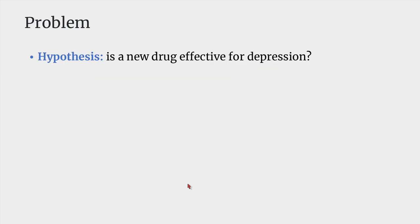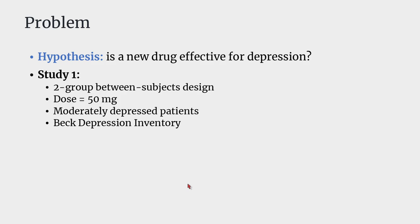Let me start by motivating what this package does and the problem it solves. Assume we have a hypothesis: is a new drug effective for depression? We have one study which is a two-group between-subjects randomized controlled trial where some patients receive a placebo and some receive our new drug. The drug is dosed at 50 milligrams in moderately depressed patients, and the outcome variable is the Beck Depression Inventory.